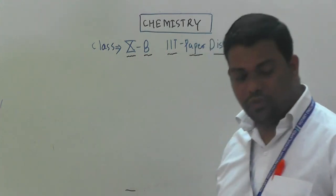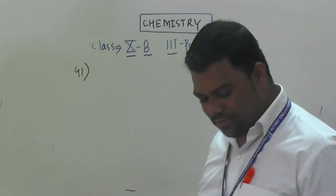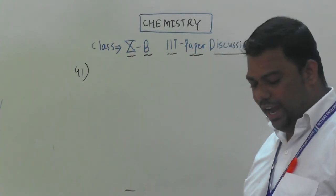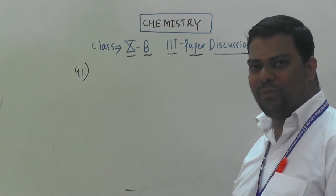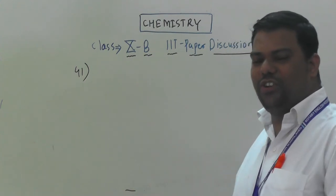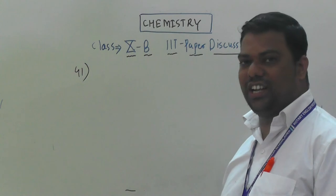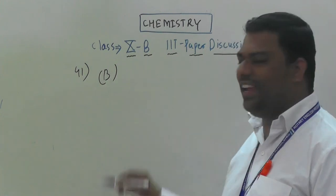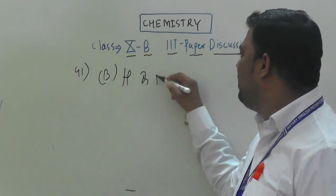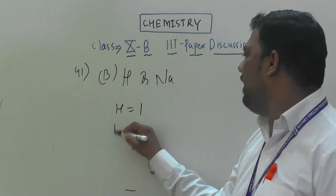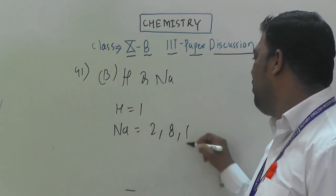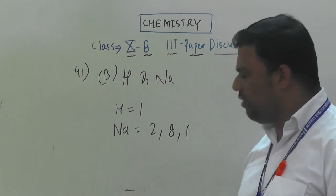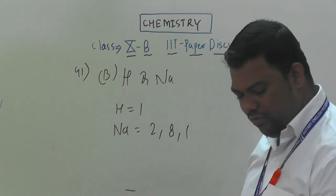Question number 41: which pair of elements has the same number of valence electrons? Looking at option B — hydrogen and sodium. Hydrogen has 1 valence electron, and sodium (2,8,1) also has 1 valence electron. So they have the same number of valence electrons. Option B is correct.